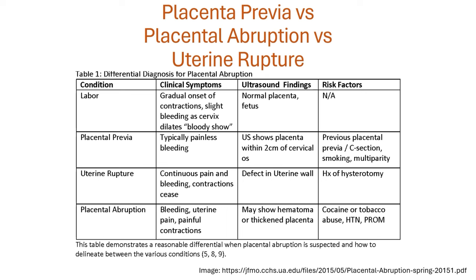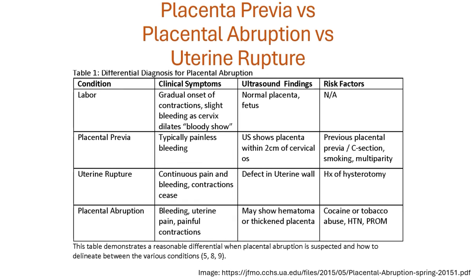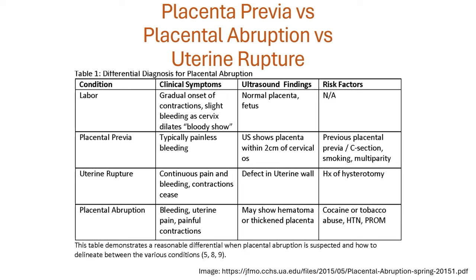In rupture of the uterus, because the uterine muscle has ruptured, it cannot contract anymore — so there are no contractions felt in the mother and the uterus is atonic, meaning it has no tone or contractile ability. In abruption, the uterus is still in place, so there is continuous painful bleeding and painful contractions.